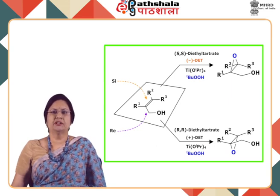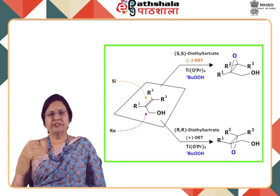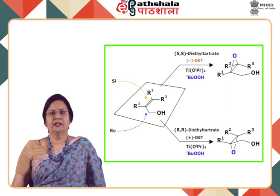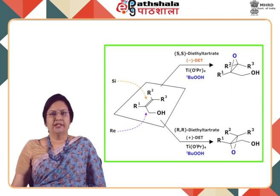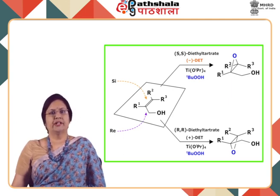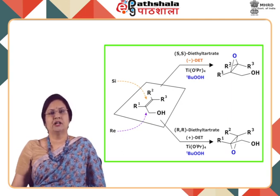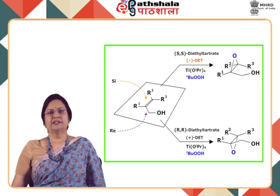In this orientation, the (−)-diester tartrate preferentially interacts with the top half of the molecule and the (+)-diester tartrate preferentially interacts with the bottom half of the molecule. Thus, (−)-diethyl tartrate results in an epoxide above the plane, and (+)-diethyl tartrate results in an epoxide below the plane.